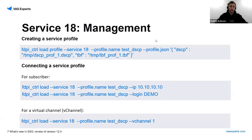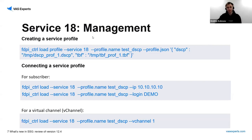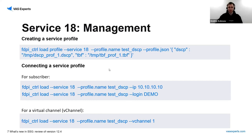Here we come to the management of Service 18. Since it consists of two parts — session policing and classes overriding — you first need to create a service profile and put all required parameters in it, then connect the service profile to a subscriber or to a virtual channel. For more detailed information, you can read our wiki documentation or send a request to our support team and we will help you.